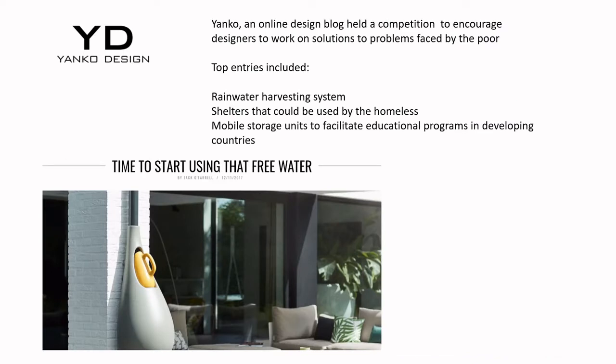Design websites like Yanko Design are looking at harvesting rainwater and creating homeless shelters. You don't necessarily need to know these exact examples, but it's good to have some in mind to bring up in exams to show understanding of how social issues are being addressed through design.